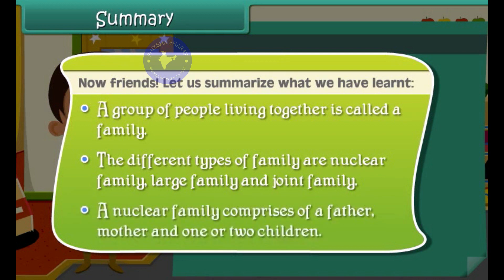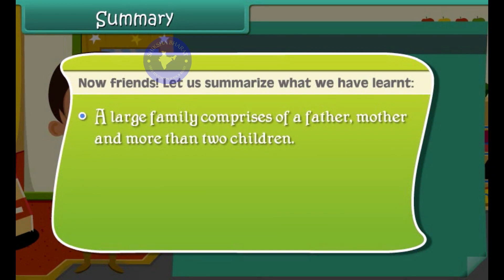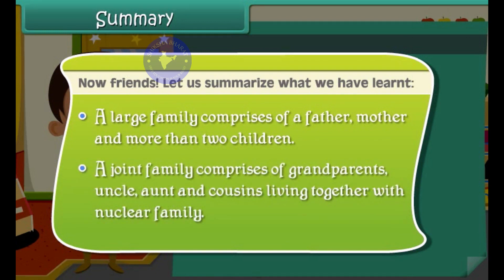A nuclear family comprises of a father, mother and one or two children. A large family comprises of a father, mother and more than two children. A joint family comprises of grandparents, uncle, aunt and cousins living together with the nuclear family.